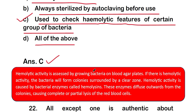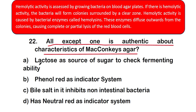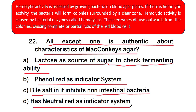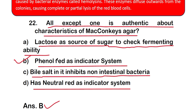Question 22: all except one is authentic about characteristics of MacConkey's agar. Options: A) lactose as source of sugar to check fermenting ability, B) phenol red as indicator system, C) bile salt inhibits non-intestinal bacteria, D) neutral red as indicator system. The right answer is option B — phenol red is the wrong statement, because the actual indicator in MacConkey's agar is neutral red.